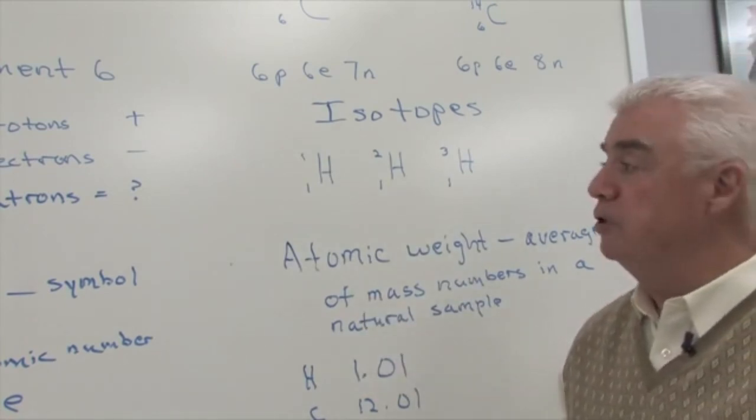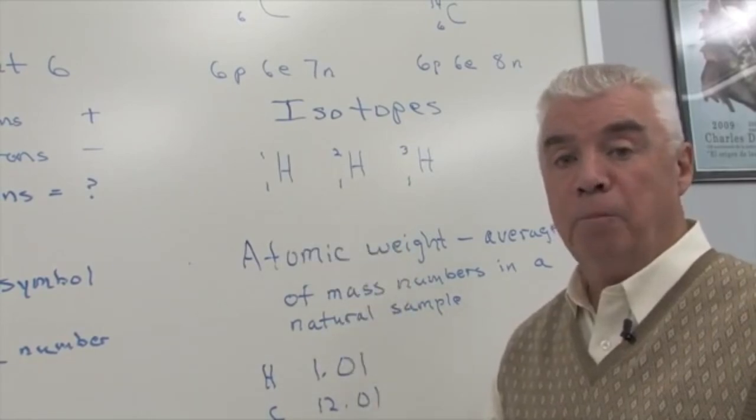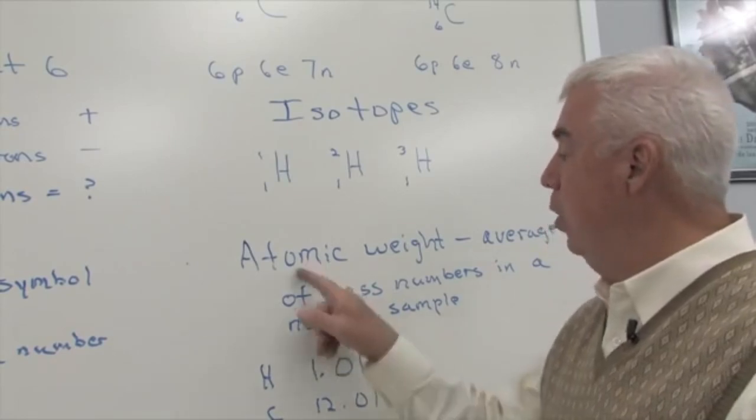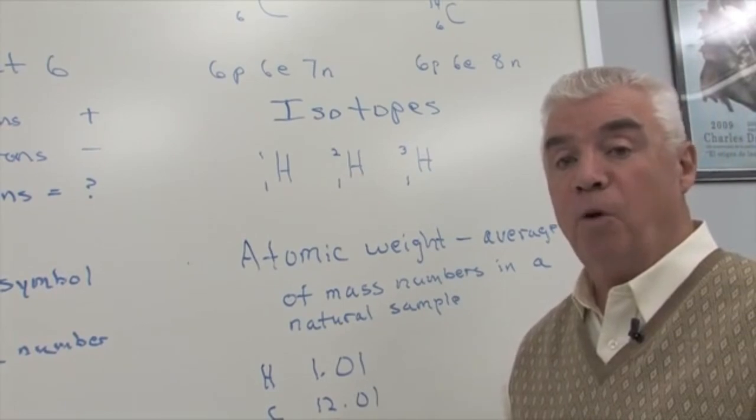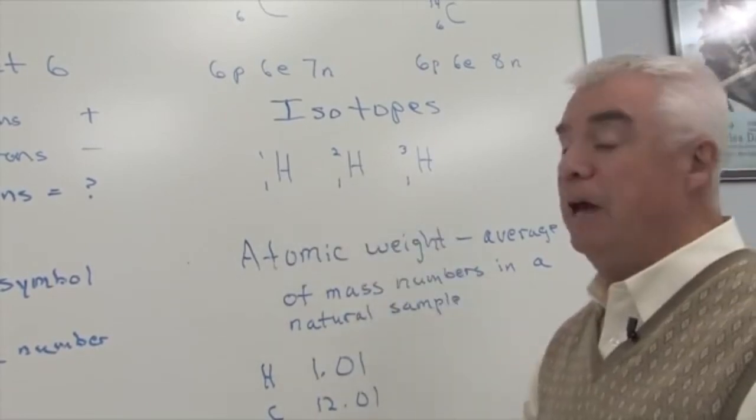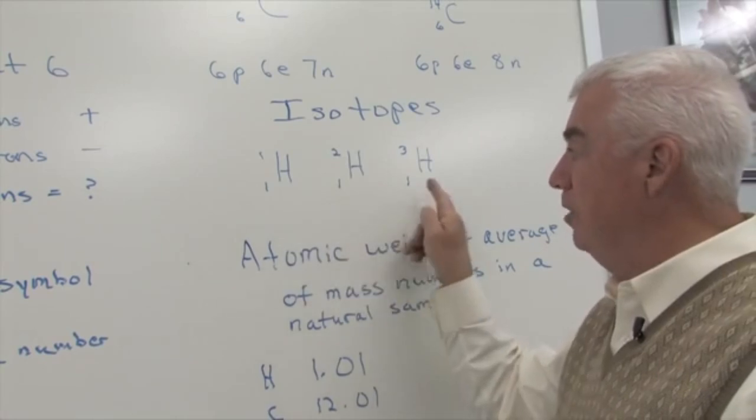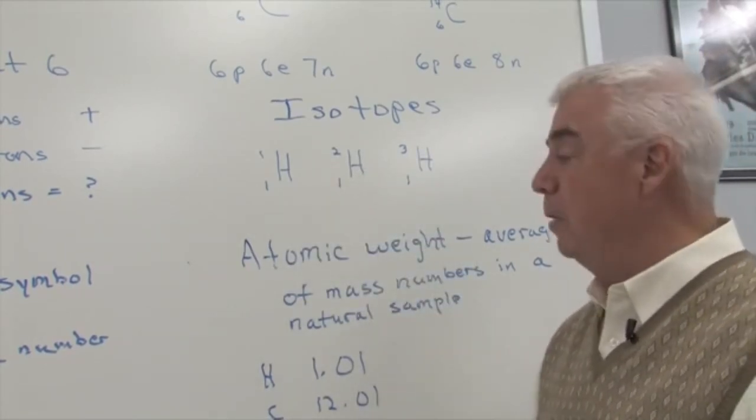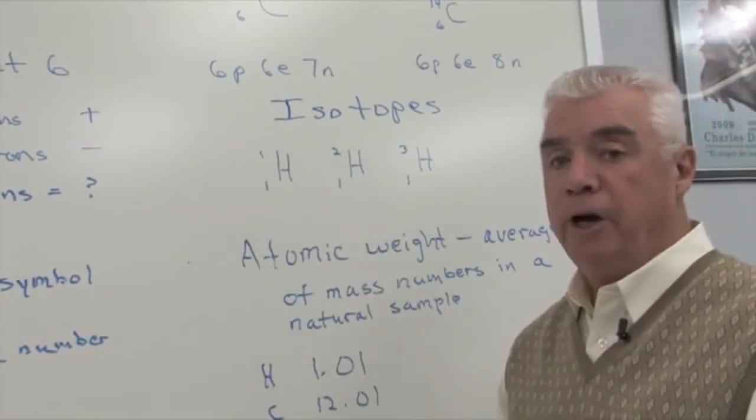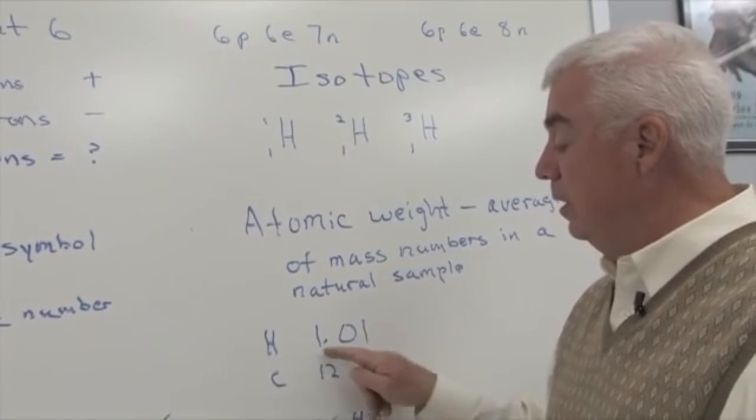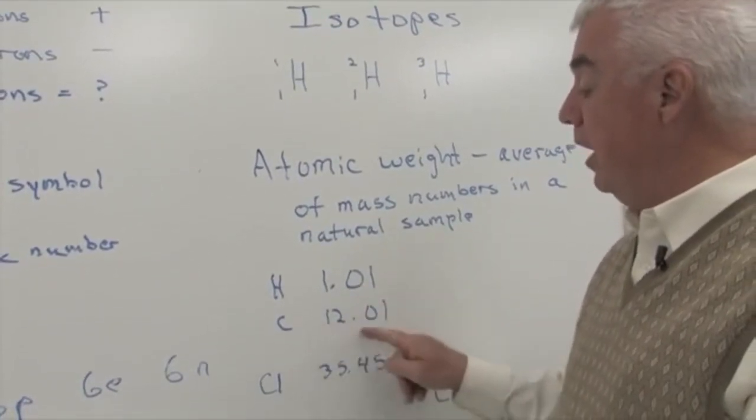We need to point out one more thing here that's sort of interesting. When you look at a chart of the elements, you're given two numbers: a sequence number, and then there's a larger number, oftentimes underneath the element. And it's called the atomic weight. It's an average of the mass numbers in a naturally occurring sample. So, for example, the average mass number of these three isotopes of hydrogen would be two. But we don't have equal amounts of these in nature. And so when they measure the atomic weight and come up with an average mass number, there's a lot more of this hydrogen one over here. And the atomic weight that's reported is one point zero one atomic mass units, they're called.